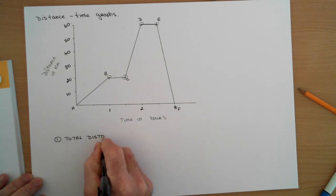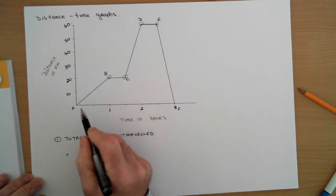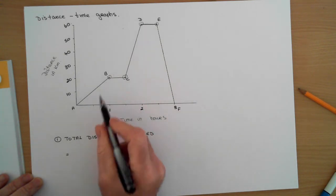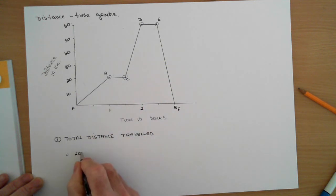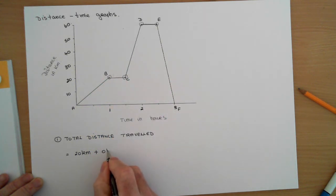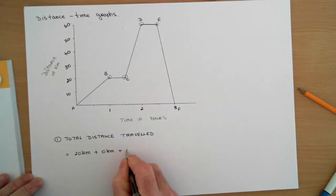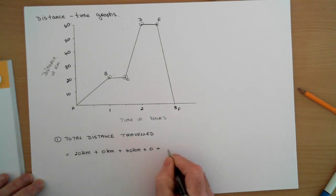What would be the total distance traveled? Let's say this person's on a bike or whatever they're on. How far did they travel? Well, in the first hour they went 20 kilometers. In the next half hour they went no kilometers. In the next half hour they went 40 kilometers. In the next half hour, and in the final half hour, 60 kilometers to get back to where they started from. That's a total of 120 kilometers.